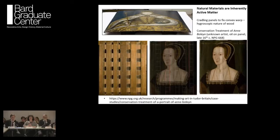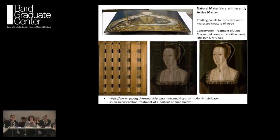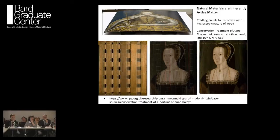Natural materials are inherently active materials, and we ignore that at our peril, as people did in the 19th and 20th centuries when they ignored the hygroscopic nature of wood — the fact that wood absorbs and releases water throughout its history. That causes panel paintings to bend, and the idea that a painting should be flat caused people to put wooden cradles on the backs of paintings. Where that movement was restrained, as seen in this work from the National Portrait Gallery, the entire painting started to break up to match the morphology of the cradle on the back. In trying to prevent harm, we actually caused further harm.